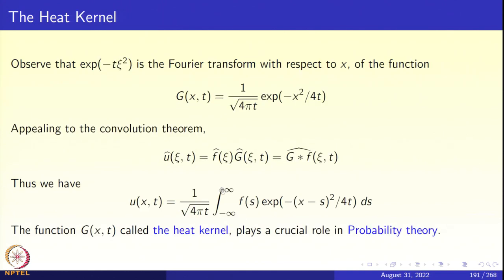Either use the inversion theorem or the fact that the Fourier transform of a Gaussian is another Gaussian with a different parameter. We observe that e^(−tχ²) is the Fourier transform of G(x,t) = (1/√(4πt))·e^(−x²/(4t)). This function G(x,t) is called the heat kernel, and it plays a very crucial role in probability, stochastic processes, diffusion processes, harmonic analysis, and differential geometry.